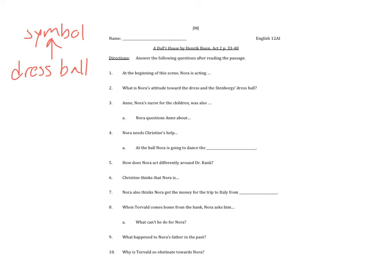We learned from Anne, Nora's nurse for the children, that Anne was also Nora's nurse when Nora was a child. Anne had a daughter years ago and left her to be Nora's nurse. Nora questions Anne about how she could leave her daughter without a mother. Something Nora is perhaps thinking about is: could I leave my own children? Would I be able to do it? Am I strong enough? Maybe a little bit of foreshadowing here.